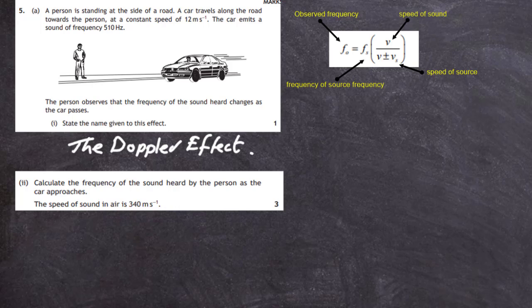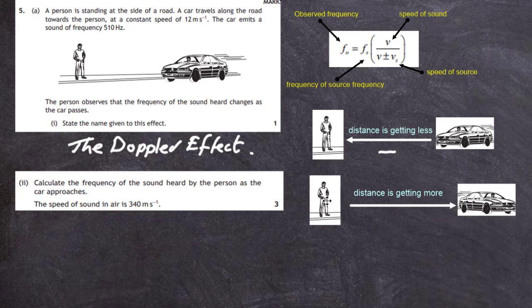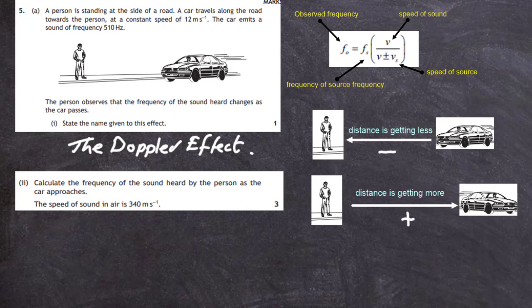Our next problem is which denominator to use: V plus Vs or V minus Vs. I remember it like this. If the car is approaching you, the distance is getting less. We symbolize that by a minus sign. If the car is moving away from you, use the add sign because the distance is moving away, getting added.